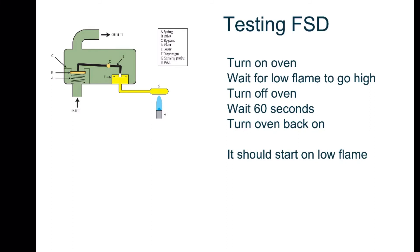How do you test both of these liquid file systems? Well, the FSD is tested by turning on the oven, waiting for the low flame to go high, then turning off the oven and waiting 60 seconds. So you've turned the oven on, you've given a flame to the file, the file has got hot, created pressure, opened the valve and allowed gas through.